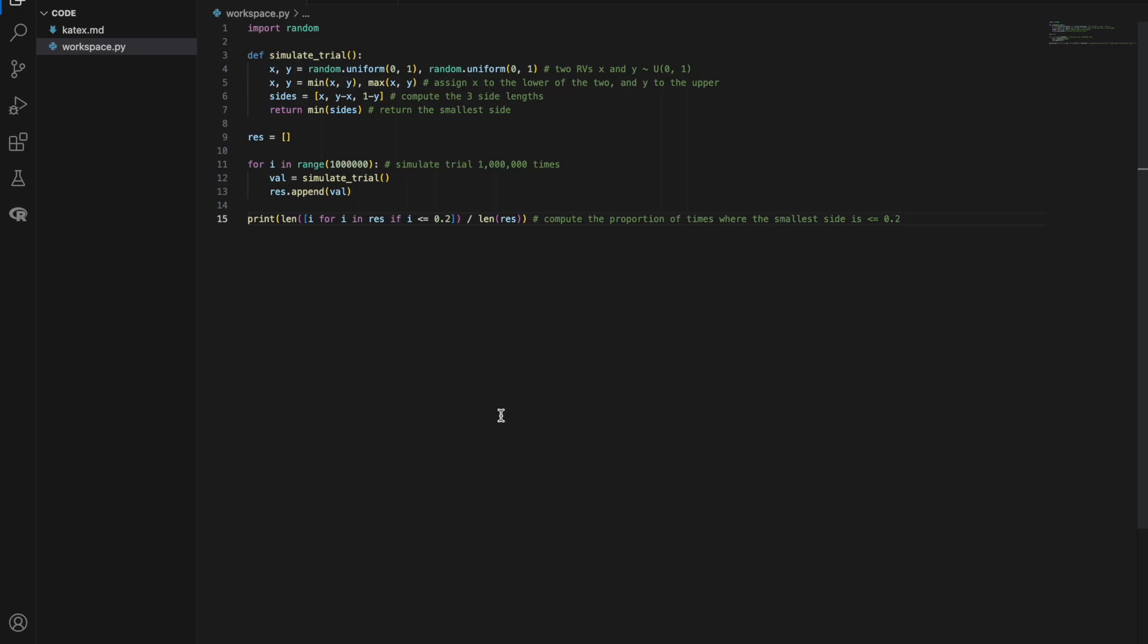We're now going to use code to simulate the last problem, which was a little bit unintuitive and can be quite challenging, especially if you didn't see either of the optimizations. So now we're just going to simulate a trial, which is breaking a stick in this case. So we have our X and Y, which are random uniform 0 to 1 random variables. And we restrict X to be the minimum of the two values, Y to be the maximum of the two values. We now compute the length of the three sides, just as we did in the problem: X, Y minus X, and 1 minus Y. And we return the minimum of the three sides.